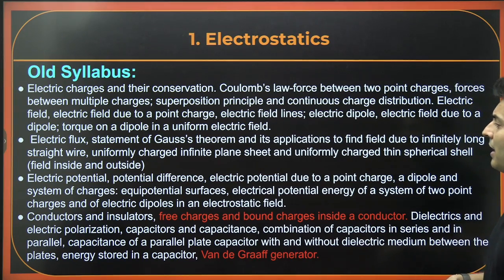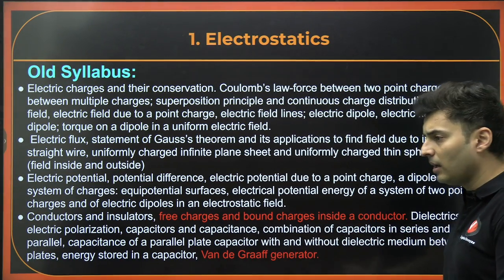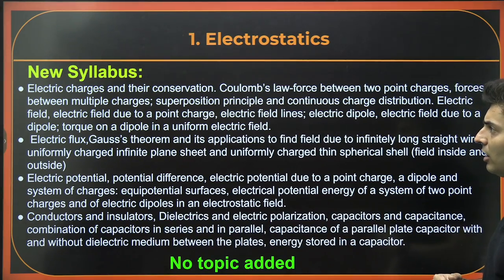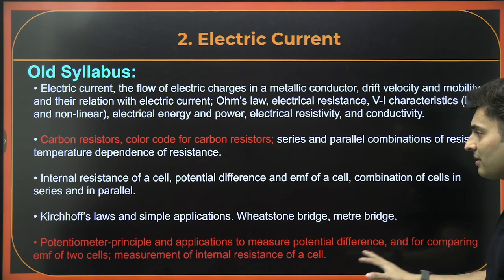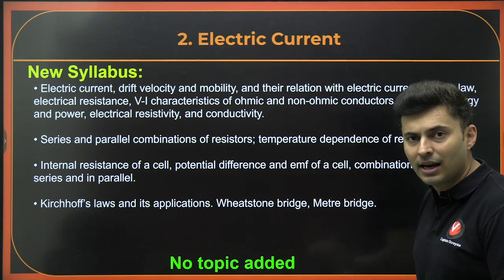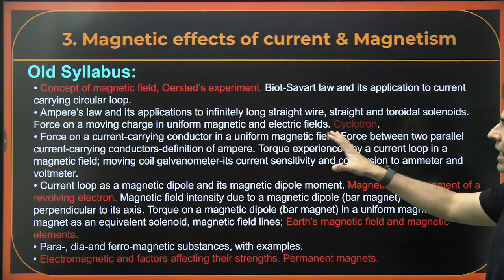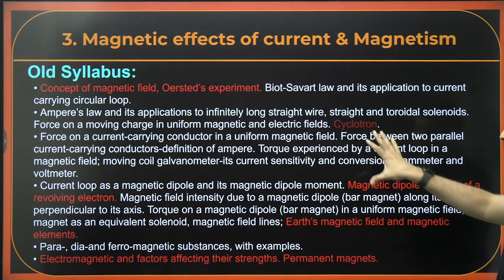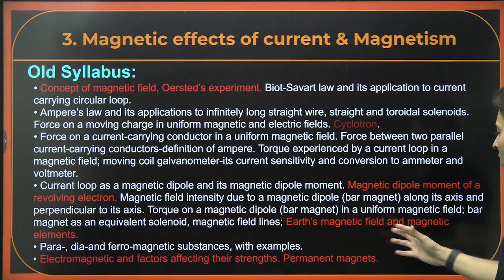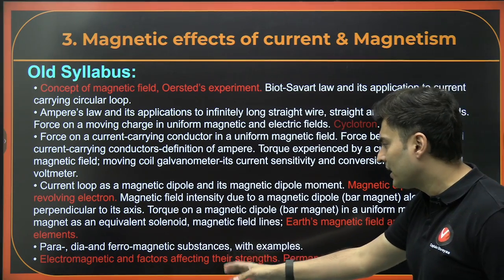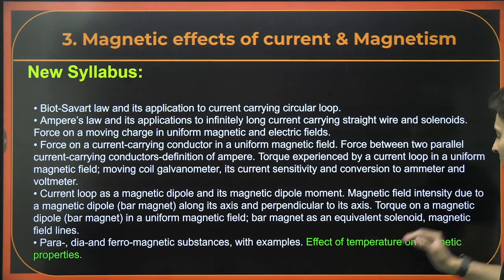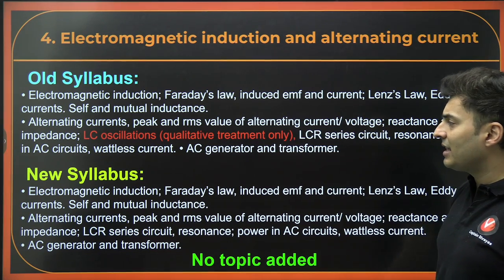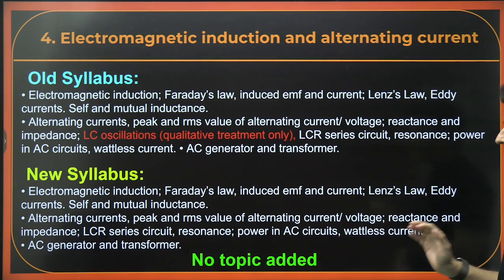Let's go to class 12. In Electrostatics, free charges and bound charges inside a conductor, and the Van de Graaff generator have been removed. Nothing new has been added in electrostatics. In Current Electricity, carbon resistors and color coding have been removed. The potentiometer and all experiments related to it have also been removed. Nothing new has been added in current electricity. In Magnetism, the concept of the field and Oersted's experiment, cyclotron, magnetic dipole moment of a revolving electron, Earth's magnetic field and its elements, factors affecting the strength of magnetic fields, and permanent magnets have all been removed. What has been added is the effect of temperature on magnetic properties. LC oscillations has been removed from EMI and AC, but no new topic has been added there.